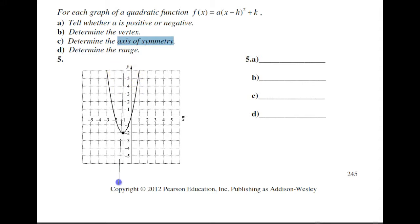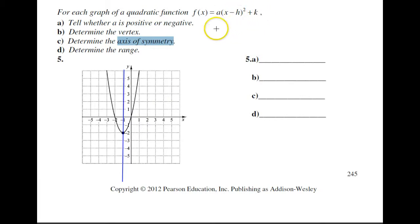This is the axis of symmetry right here. It's the x-value, so the axis of symmetry is x equals negative 1. This low point of the parabola is the minimum point, and that minimum point is given as our y-value, which is negative 2. Our y-value is k, and our x-value, which is the axis of symmetry, is going to be negative 1.